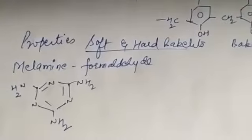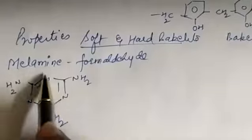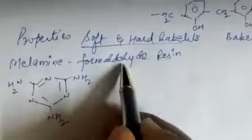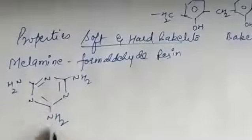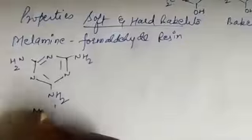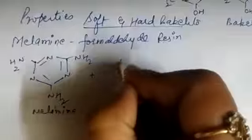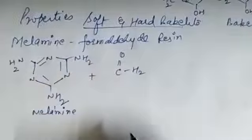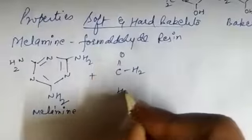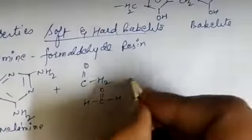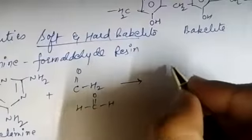Let us now talk about melamine formaldehyde resin. As the name suggests, it has two monomers: the first is melamine, and the second is formaldehyde (HCHO or HCOH). They will combine and condense to first form an intermediate product.